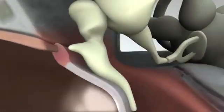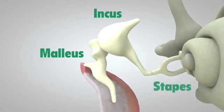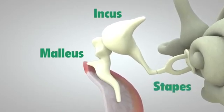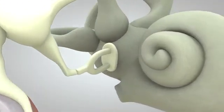which in turn vibrates three tiny bones called the malleus, incus, and stapes. These bones amplify or increase the sound vibrations and send them to the cochlea.